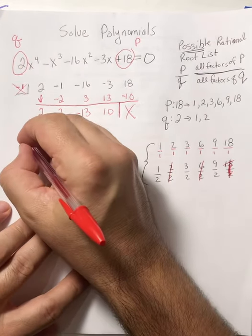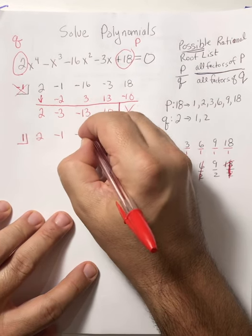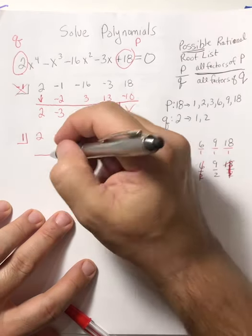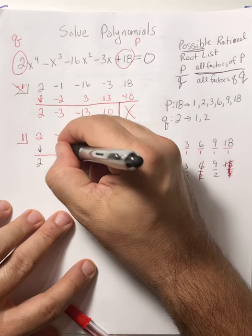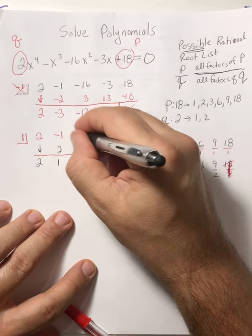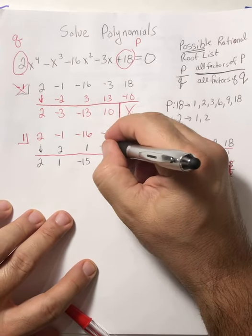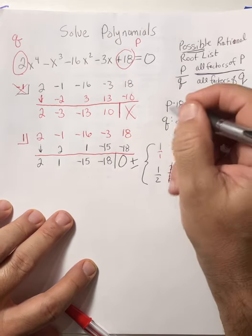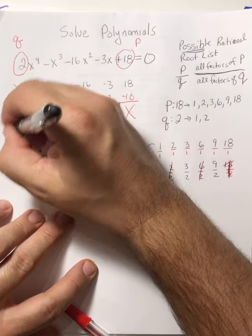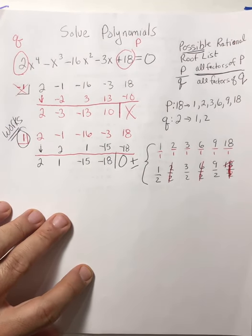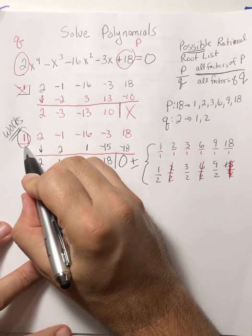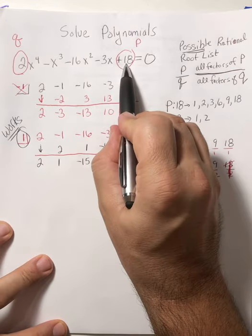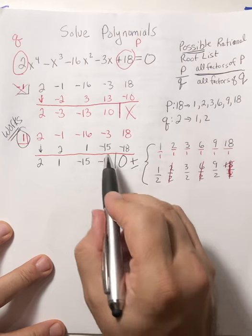Let's try positive 1. I'm going to drop the lead. 1 times 2 is 2, then we add. 1 times 1 is 1, then we add. 1 times negative 15 is negative 15, we add. 1 times negative 18 is negative 18 — and look at this, that's a remainder of 0. 1 works! Now, we could have a repeat root, so you could try 1 again. But if you try 1 again, you do not go back to the original — always use the reduced form.